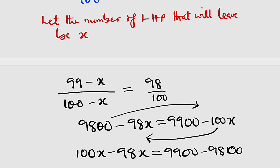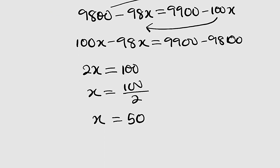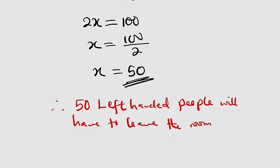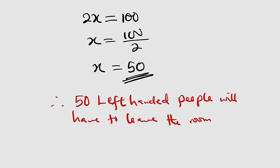x is the number of left-handed people that will have to leave the room to bring the percentage down to 98 percent. Therefore, 50 left-handed people will have to leave the room. Thank you for watching — do share with your friends and colleagues, and don't forget to subscribe to my YouTube channel for more exciting videos. Bye!